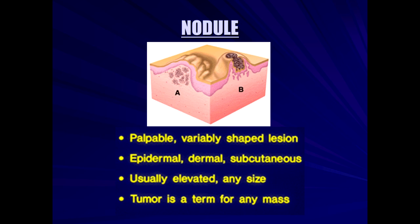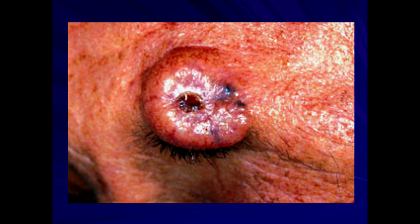Nodules would be something like a basal cell or squamous cell carcinoma, where you see a rolled border and elevated component. There's nodularity — if you squeeze it from the lateral sides, there's substance to it, almost like a marble underneath. That's what we call a nodule.